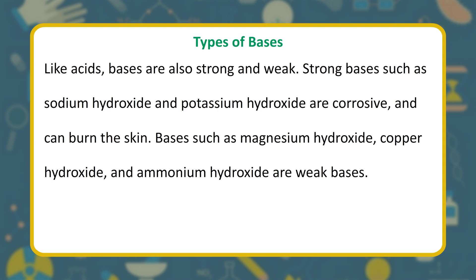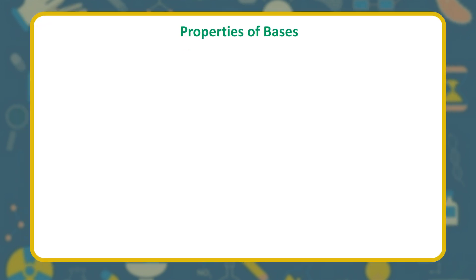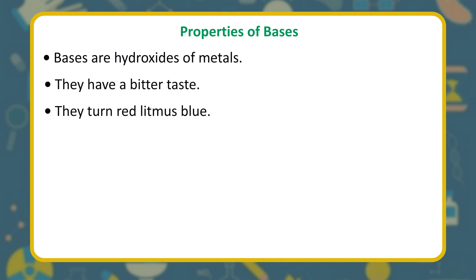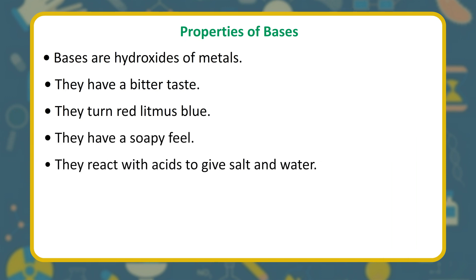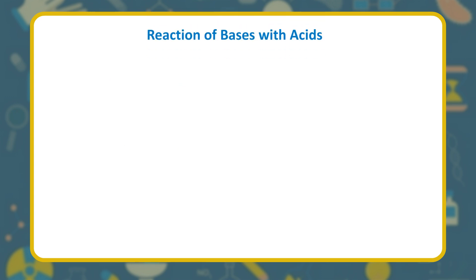Like acids, bases are also strong and weak. Strong bases such as sodium hydroxide and potassium hydroxide are corrosive and can burn the skin. Bases such as magnesium hydroxide, copper hydroxide, and ammonium hydroxide are weak bases. Properties of bases: they are hydroxides of metals; they have a bitter taste; they turn red litmus blue; they have a soapy feel; they react with acids to give salt and water.